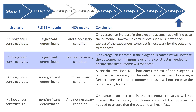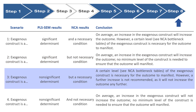If the exogenous construct is a significant determinant but not a necessary condition, we can say that an increase in X will increase Y, but there is no minimum level of the construct needed to ensure the outcome will manifest.